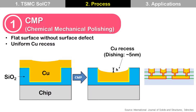Step 1: CMP — Chemical Mechanical Polishing. This process prepares the final bonding surface. The wafer surface should be flat without surface defects, and should have a uniform copper recess, so-called dishing — for example, about 5nm.